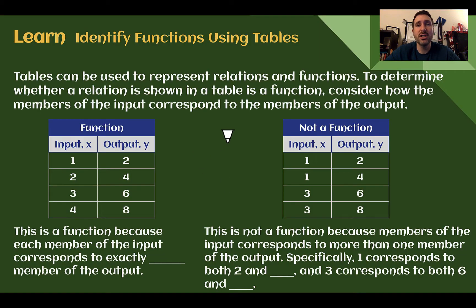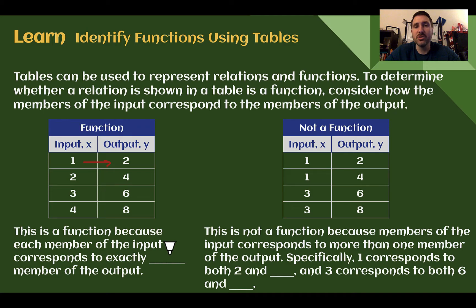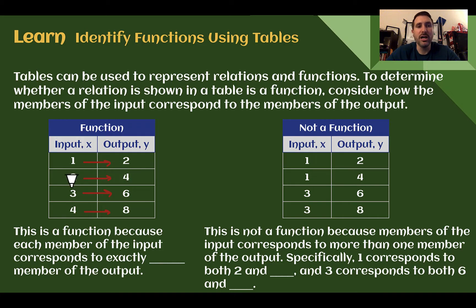Let's learn: identify functions using tables. Tables can also be used to represent relations and functions. To determine whether a relation in a table is a function, check each input value and make sure it only goes to one output. Look for unique input values: 1 only shows up once, so it only goes to 2. 2 only goes to 4. 3 only goes to 6. 4 only goes to 8. Each input goes to exactly one output, so this is a function.